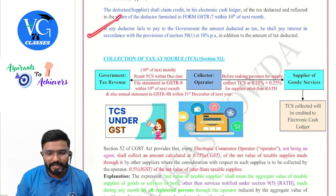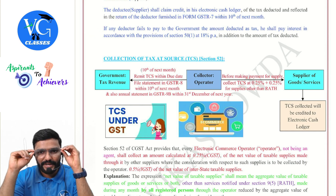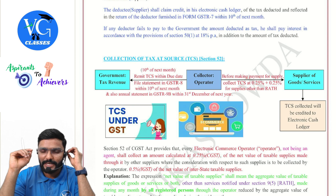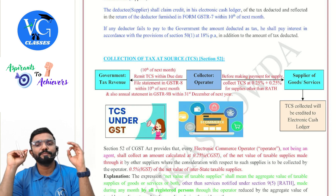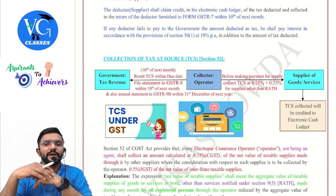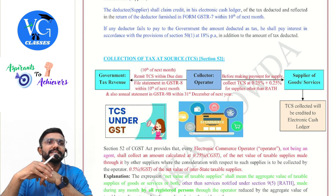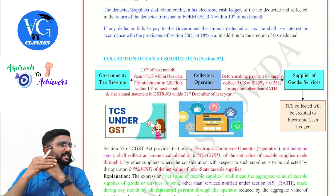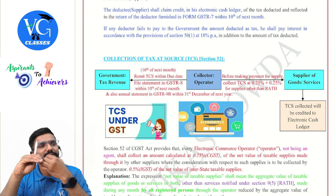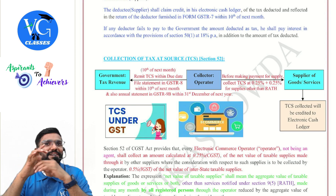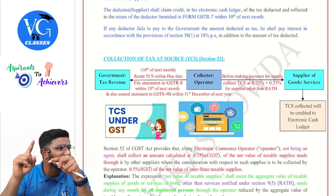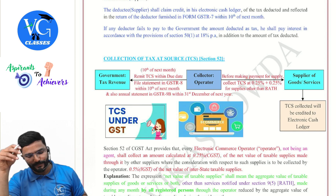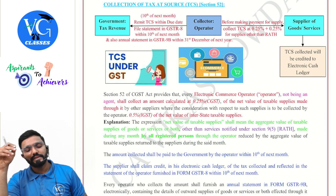If any deductor fails to pay the amount deducted as tax to the government, he shall pay interest in accordance with section 50(1) at 18% per annum, in addition to the amount of tax deducted. That means if TDS was deducted but not remitted to the government, even if it is paid late, you have to deposit it along with interest.